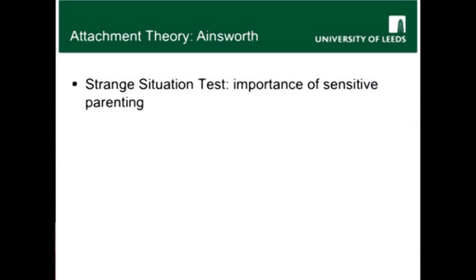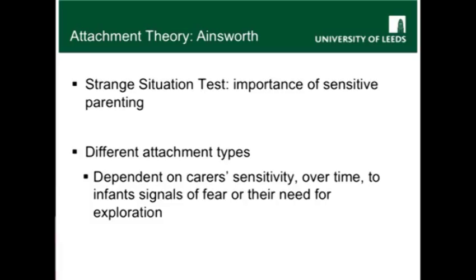Healthy attachments will develop when carers can sensitively judge what the child needs in any given context, given these competing behavioural goals. Based on the now famous strange situation test, the ability of a carer to regulate an infant's anxiety in novel or frightening contexts is deemed to establish a secure base, crucial for healthy attachment and later psychological wellbeing in the child. Work with the strange situation test helped Ainsworth and others identify different attachment types, thought to be derived from different levels of sensitivity displayed by carers to the infant's signal of fear, their need for proximity and security, or their need for exploration.